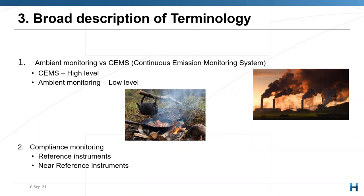Just a couple of descriptions of terminologies. Firstly, we need to distinguish between ambient monitoring and continuous emissions monitoring, better known as CEMS. CEMS is high level, high concentrations — as shown in the picture on the right, that is a typical CEMS monitoring application with lots of pollution. Ambient monitoring is a lower form of monitoring, lower quantities, something like a campfire — bacon and coffee level.